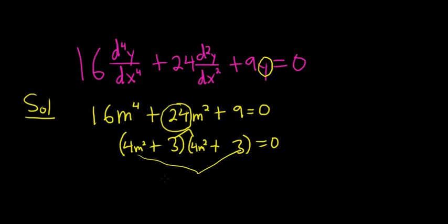So you have a product equal to 0. Now you set each factor equal to 0. So 4m squared plus 3 equals 0. It's kind of silly, but I'll write it twice. You really only have to write it once.